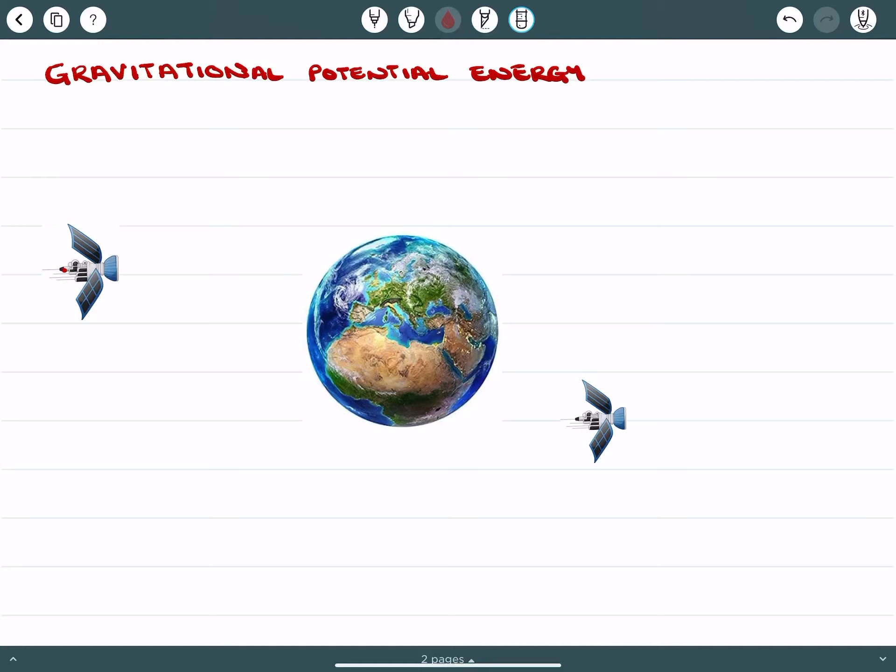So in our last tutorial, we had a look at satellite motion and the forces, gravitational aspects, and velocity aspects that occur when satellites are in orbit around a larger body due to gravity. In this tutorial, I want to look at gravitational potential energy, and it does have to do with the motion of satellites.